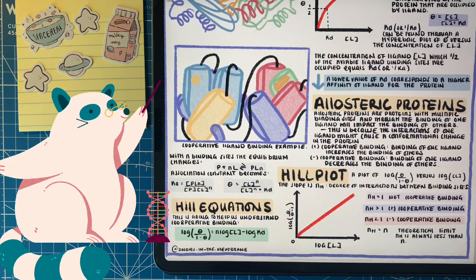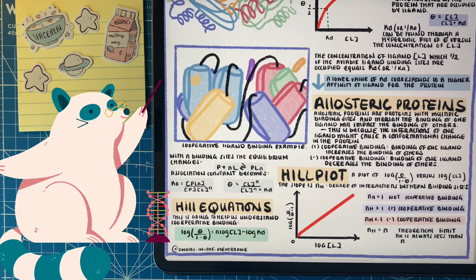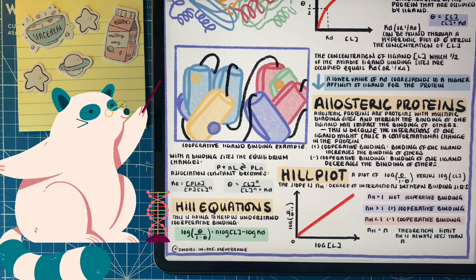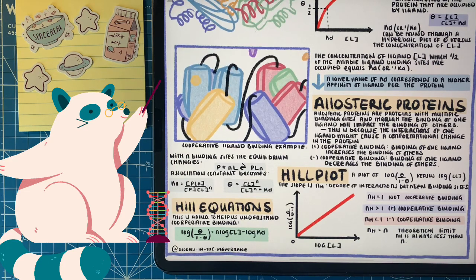When talking about enzymes with multiple binding sites that interact with ligands, we have to talk about allosteric proteins. When a ligand interacts with a binding site on an enzyme, it causes a conformational change to the protein. Allosteric proteins are proteins with multiple binding sites, and through the binding of one ligand it will impact the binding of ligands at other binding sites on the enzyme. This can either be a positive cooperative binding impact — meaning the binding of one ligand increases the binding affinity of others — or a negative cooperative binding impact, meaning it lowers the affinity for more ligands to interact with the protein.